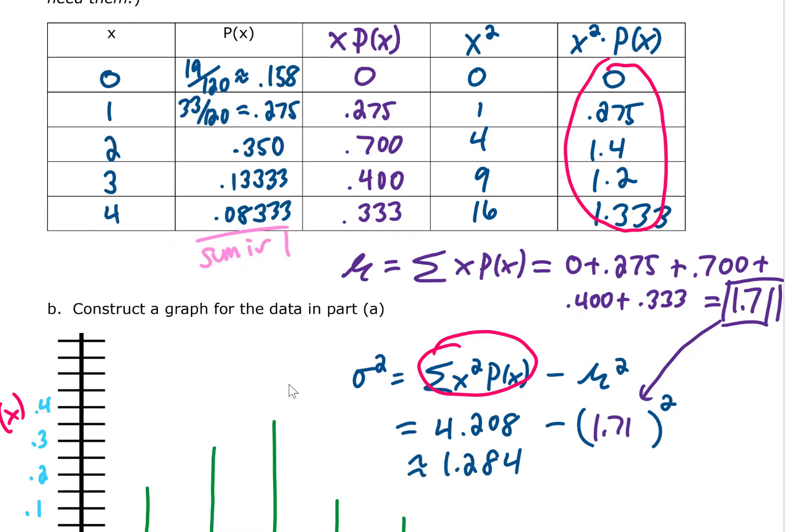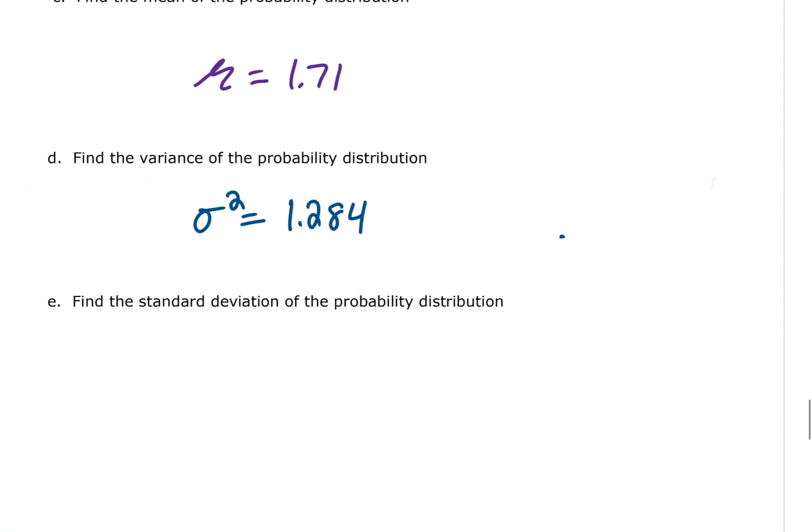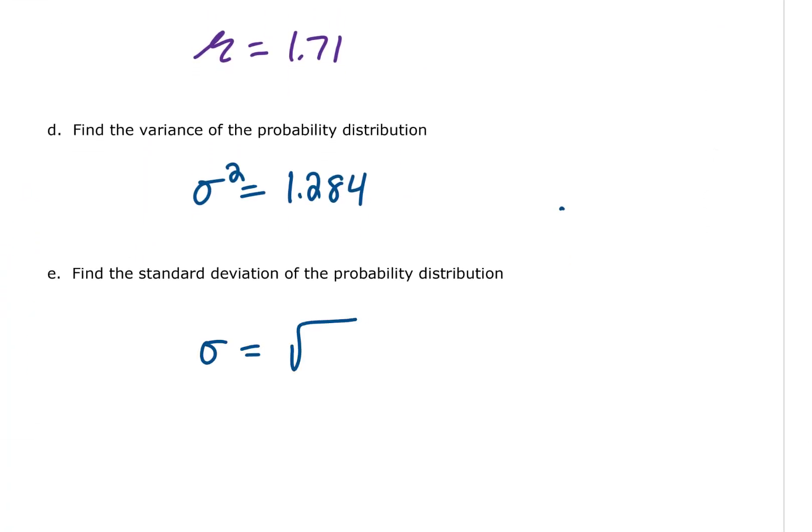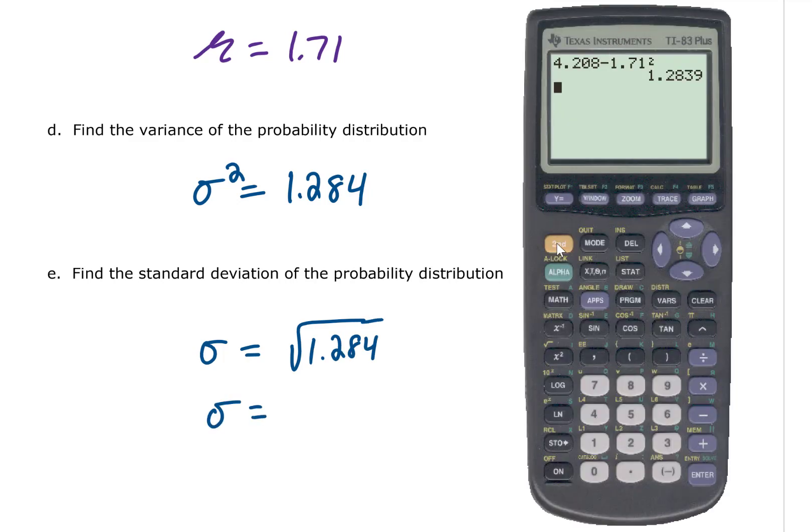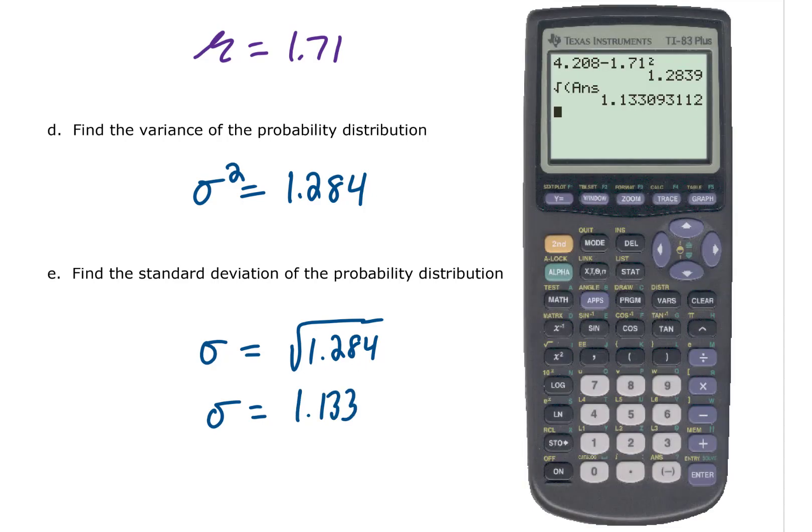To find the standard deviation of that same distribution we just need to take the square root of the variance. Bringing our calculator back up, I'll type second and then this square root button. That brings up a square root and if we want the square root of the previous answer I can do second and answer. That is going to give me the answer for my standard deviation which is 1.133.